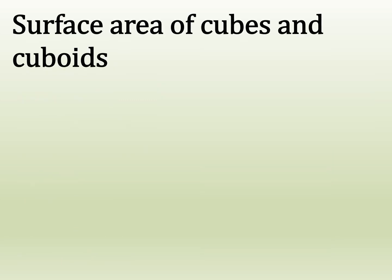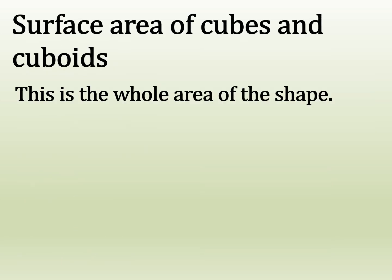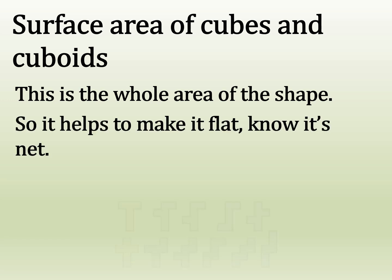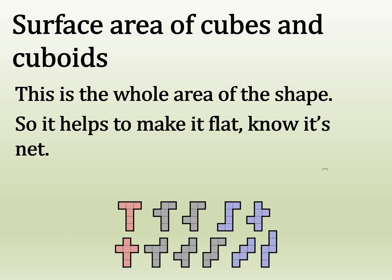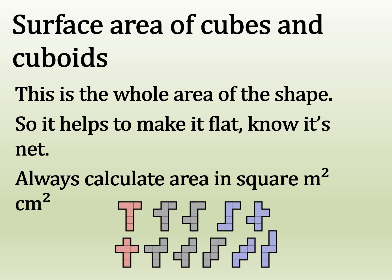Surface area of cubes and cuboids is the whole area of the shape. That's why it helps to make it flat and know what the nets are. We always calculate this area in square metres or centimetres squared by using the little two there.